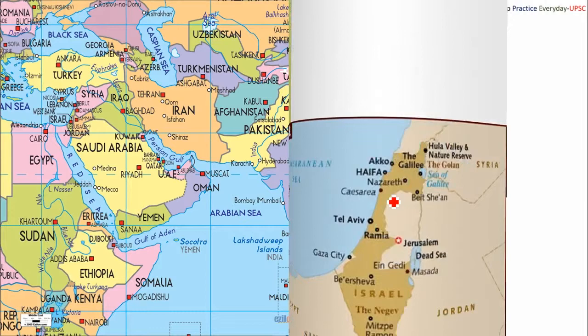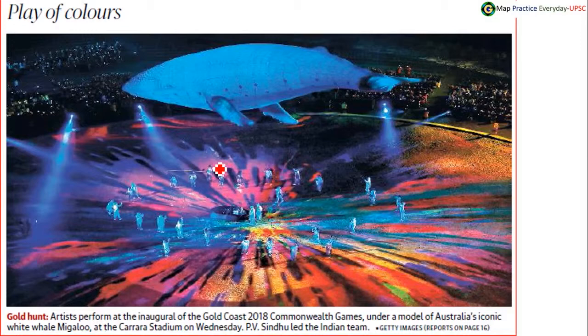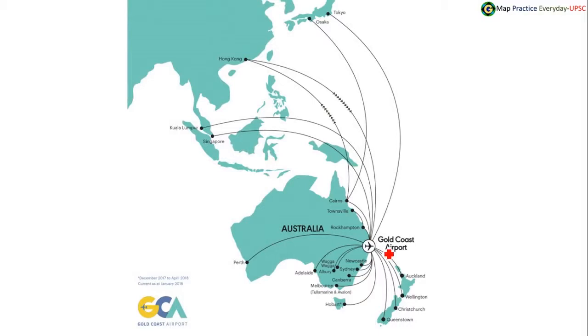Let's begin today's maps. In today's news, the Commonwealth Games have begun and PV Sindhu has led the Indian team. The Commonwealth Games are happening in Gold Coast, Australia. Gold Coast is located at the easternmost part of Australia.